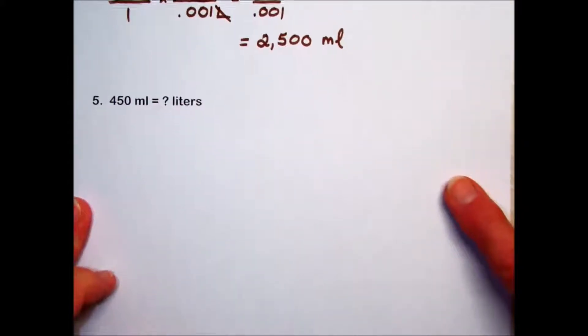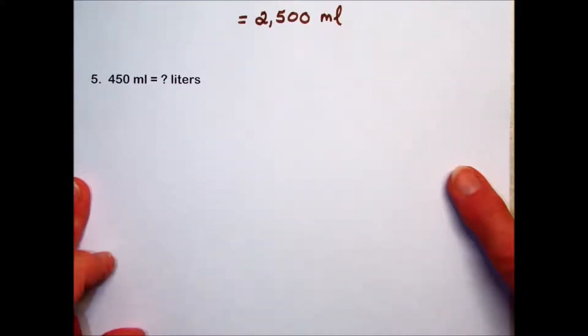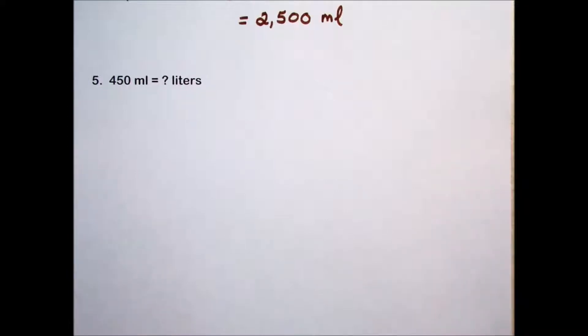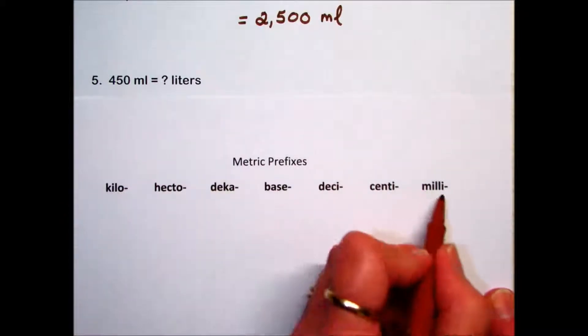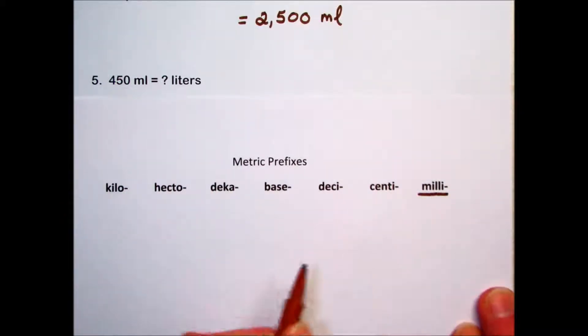In problem number 5, they're asking us to convert 450 milliliters to liters. If we go to that metric prefix chart, identify where we are. We're at milliliters, we want to go to liters, which is the base unit.